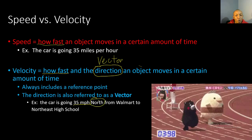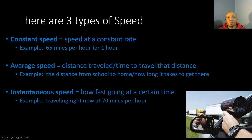There are three types of speed. First, constant speed is a speed at a constant rate — for example, 65 miles per hour for one hour. If you're on an interstate and your mom or dad sets the car on cruise control, they are setting the car for a constant speed.